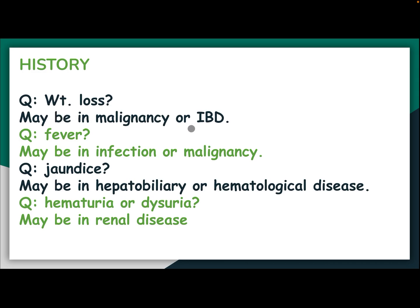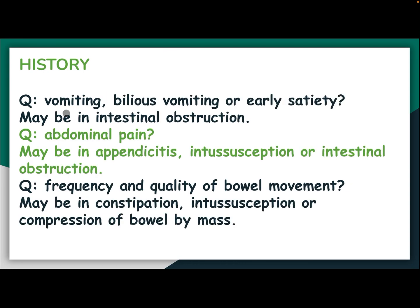History. Weight loss may indicate malignancy or inflammatory bowel disease. Fever may indicate infection or malignancy. Jaundice may indicate hepatobiliary or hematological disease. Hematuria or dysuria may indicate renal disease. Vomiting — bilious vomiting or early satiety — may indicate intestinal obstruction.